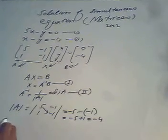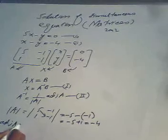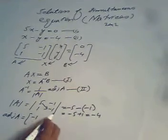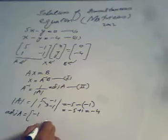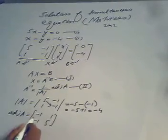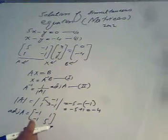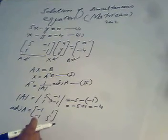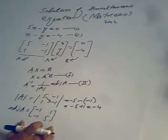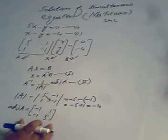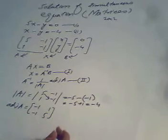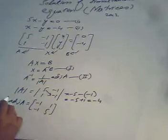Now we need to find the adjoint of A. The adjoint of A is [-1, 1; 1, -1]. If you are not familiar with the concept of adjoint and determinant, you should watch our previous lecture on A inverse where we discussed these terms in detail.